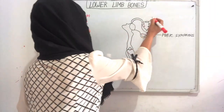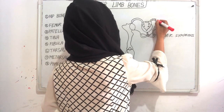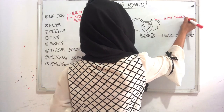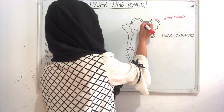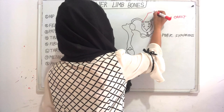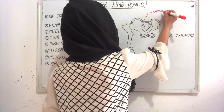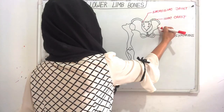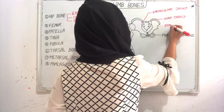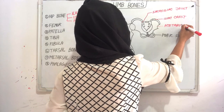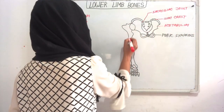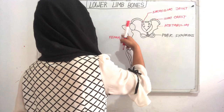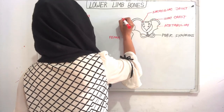This is the hip bone. This part is the iliac crest. The ilium and sacrum join together and make the sacroiliac joint. This socket is the acetabulum. The head of the femur joints with the acetabulum and makes the hip joint.